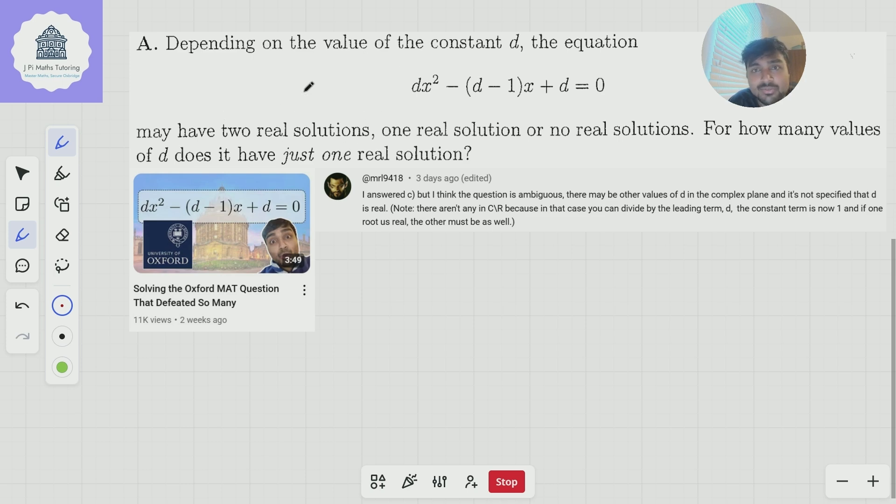So let's just go over what this question was asking. It says, depending on the value of the constant d, the equation dx squared minus (d minus 1)x plus d equals 0 may have two, one, or no real solutions. And we want to know for how many values of d does it have just one real solution? And in the question, I ended up deducing that the answer was three. There are three values of d for which this equation has one real solution. But those are only three real values of d. What about if d is complex?